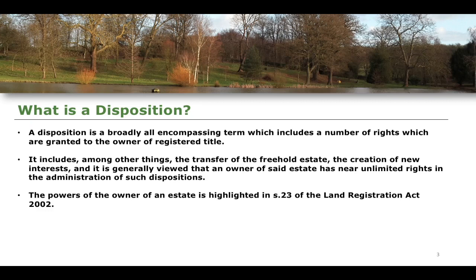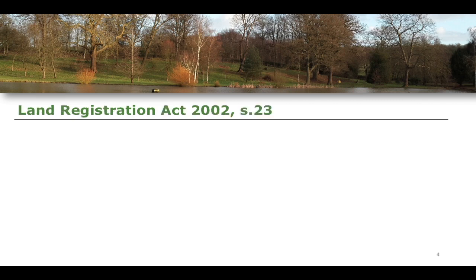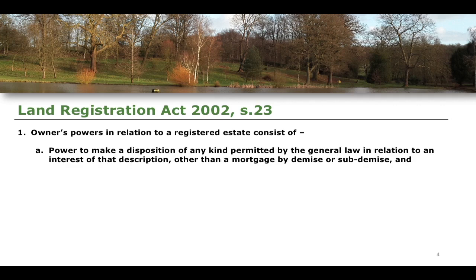The powers of an owner of a registered estate are highlighted by section 23 of the Land Registration Act 2002, which states that the owner's powers in relation to a registered estate consist of the power to make a disposition of any kind permitted by the general law in relation to an interest of that description, other than a mortgage by demise or sub-demise. There are two limitations here: first, no mortgage by demise or sub-demise; and second, only a disposition permitted by general law — you cannot break the law in creating a disposition.